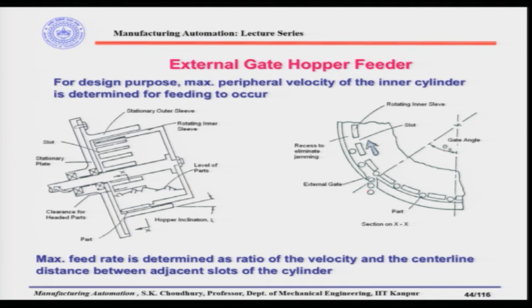The parts will be coming one by one through the external gate. This is the simple design. The maximum feed rate from this hopper feeder is decided by the velocity and the distance between the adjacent slots. Let us see how it can be determined.